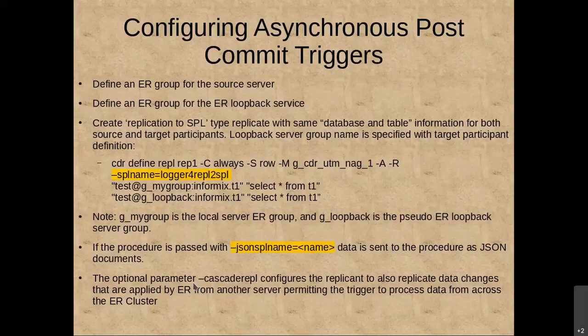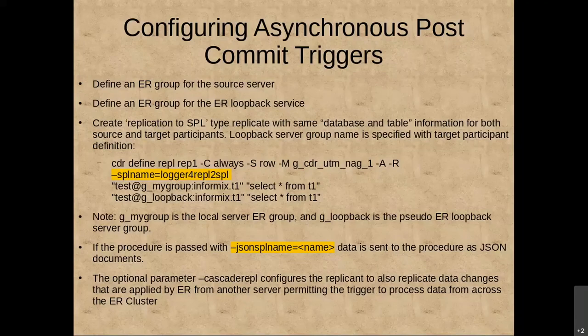There is an optional parameter dash-cascade_REPL. By default, ER does not replicate data that arrives from another ER node — it depends on the source node to send data to any other nodes. But for post-commit triggers replicating to a stored procedure, you may want to capture all data arriving from any server. In that case, dash-cascade_REPL tells the system to forward replicated data to the stored procedure as well as locally modified data.